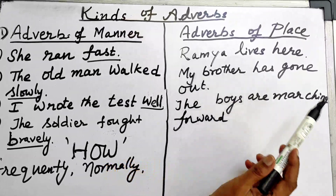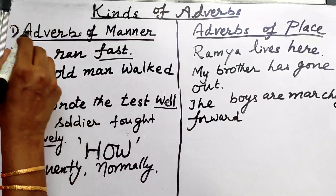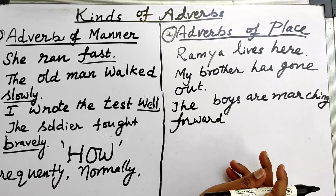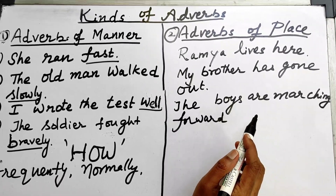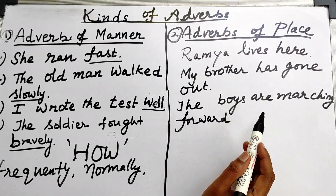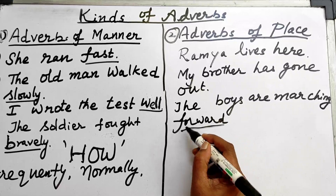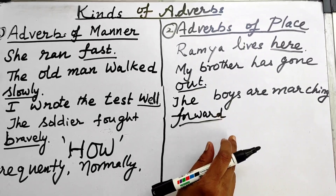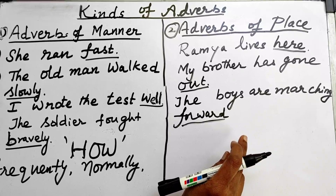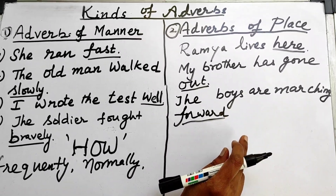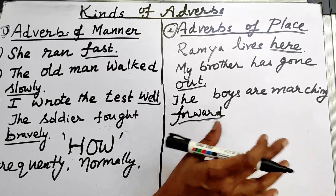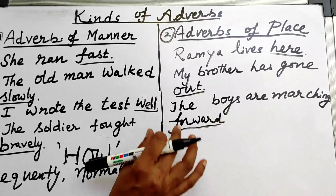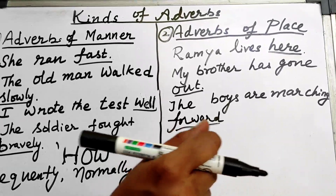The second kind is adverb of place. Examples: 'Ramya lives here,' 'My brother has gone out,' 'The boys are marching forward.' The words 'here,' 'out,' and 'forward' represent place or direction. So when a word is added in the sentence to qualify the verb and it tells about place or direction, that is called an adverb of place.